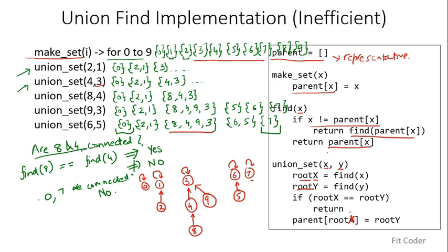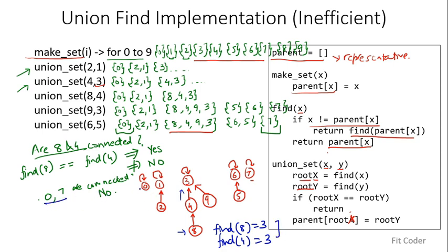To check if 8 and 4 are connected, we call find(8). Node 8 is not its own parent, so we get parent of 8 which is 4, and recursively call find(4). Node 4 is not its own parent, so we get 3, and find(3) returns 3 since 3 is its own parent. So find(8) returns 3. find(4) also returns 3. Since both return the same value, 8 and 4 are connected. For find(0) and find(7), they return 0 and 7 respectively — different values, so they are not connected.